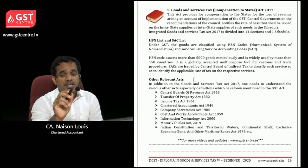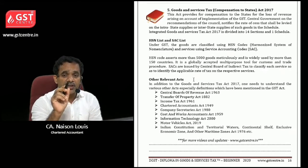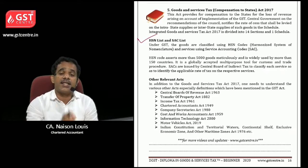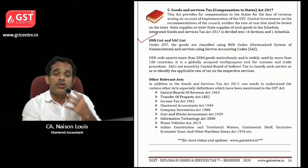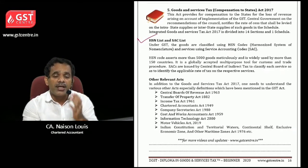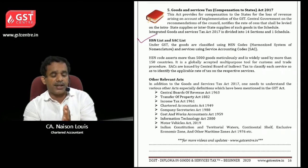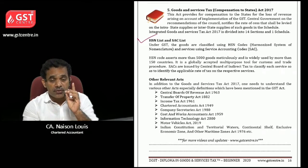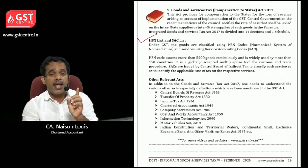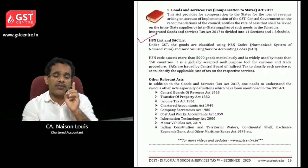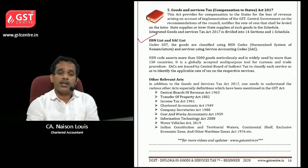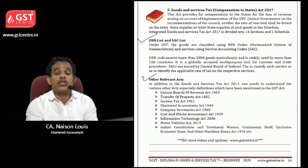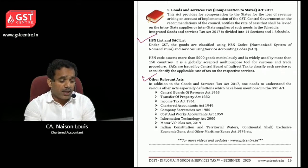Next is the accession list and SSC list. How will you determine the rate for goods or services? It will be determined only by referring to the accession list and SSC list. The rate of goods is given in the accession list and the rate of services is also given in the accession list.